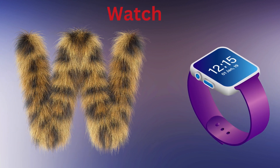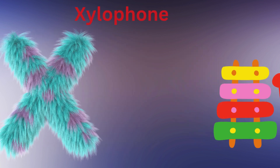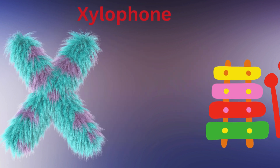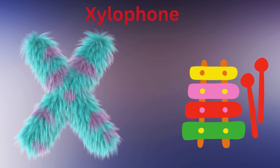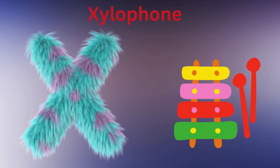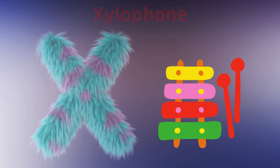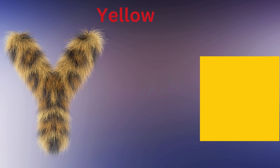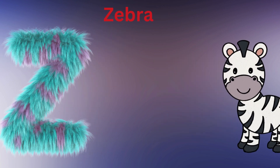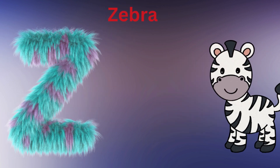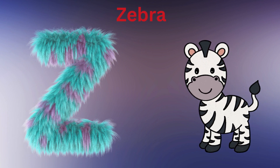W is for Watch, W-W-Watch. X is for Xylophone, X-X-Xylophone. Y is for Yellow, Y-Y-Yellow. Z is for Zebra, Z-Z-Zebra.